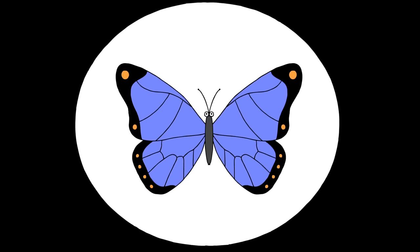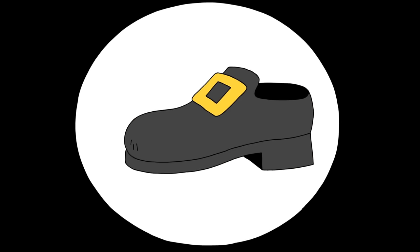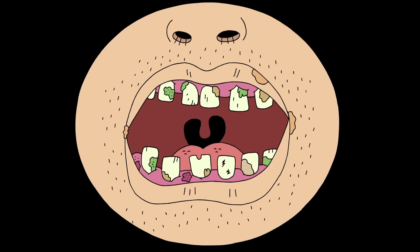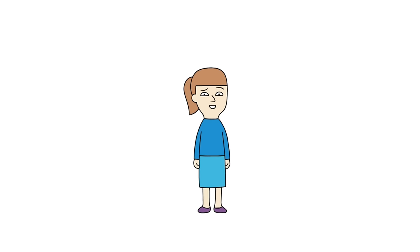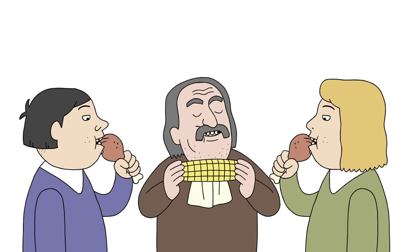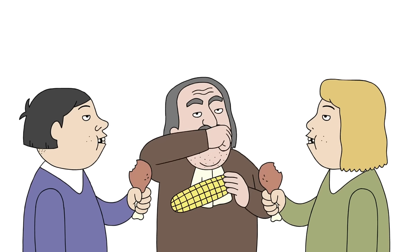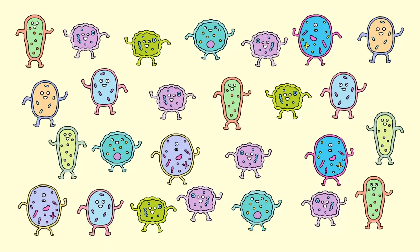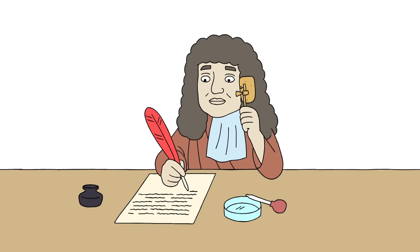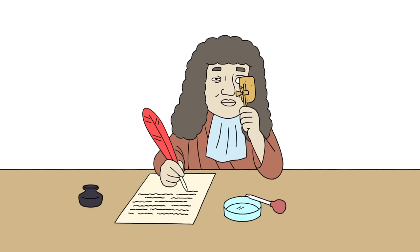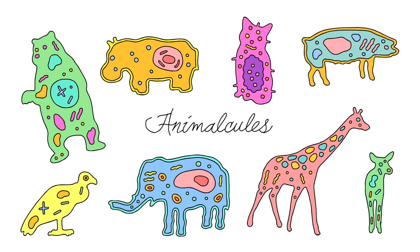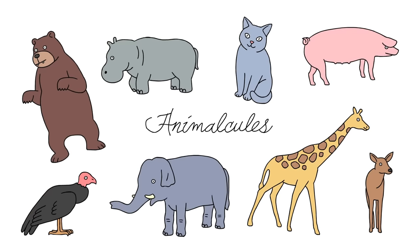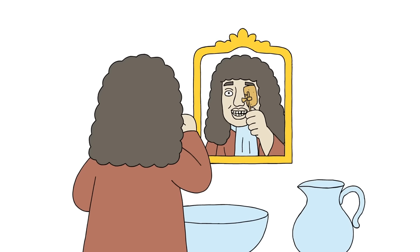Once Leeuwenhoek had his microscope ready, he went to town, looking at anything and everything he could with it, including the gunk on his teeth. Yes, you heard right. He actually discovered bacteria by looking at dental scrapings. Which, when you keep in mind that people didn't brush their teeth much, if at all, back then, he must have had a lovely bunch of bacteria to look at. When he wrote about his discovery, he didn't call them bacteria as we know them today, but he called them animalcules, because they looked like little animals to him.